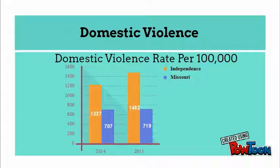Domestic violence was a top overall and childhood public health concern among residents. Domestic violence includes any instance of physical or sexual violence, threats of physical or sexual violence, or emotional abuse. This graph relies on data from the Missouri State Highway Patrol Uniform Crime Reporting Database. The rate of domestic violence rose 21% in Independence from 2014 to 2015, and Independence also had a rate 100% higher than that of Missouri.